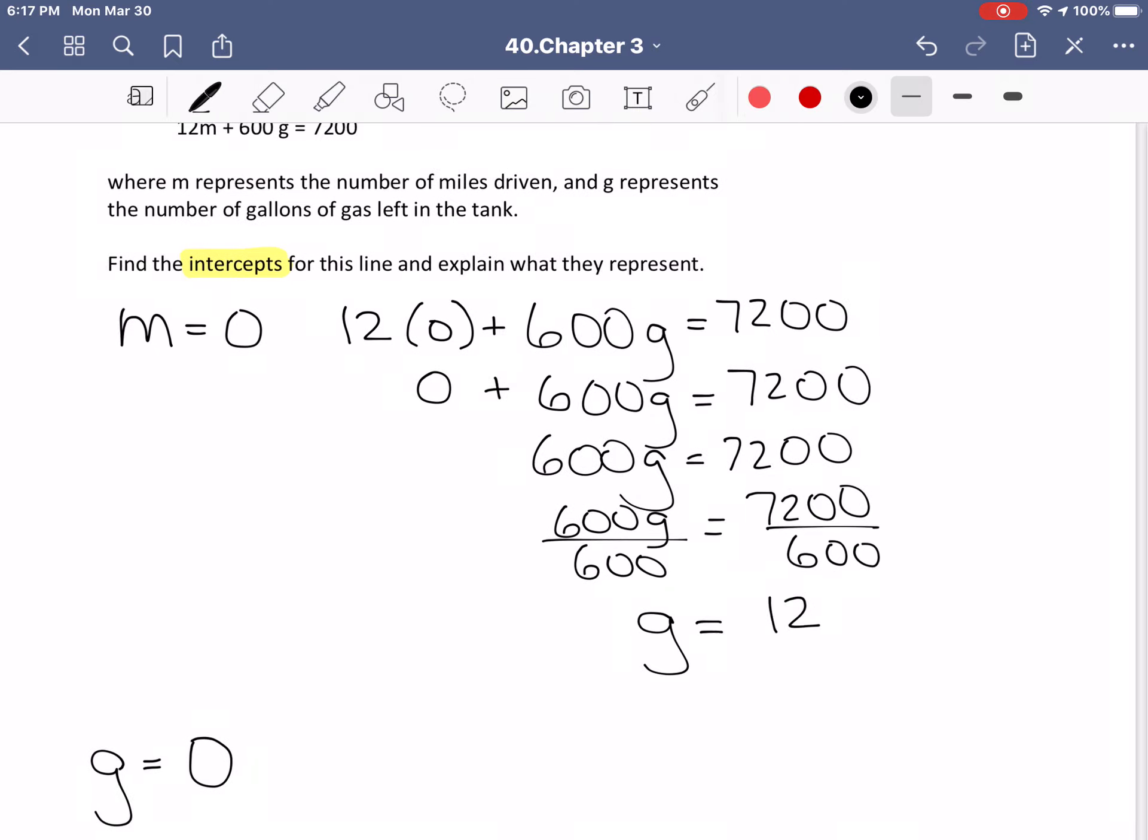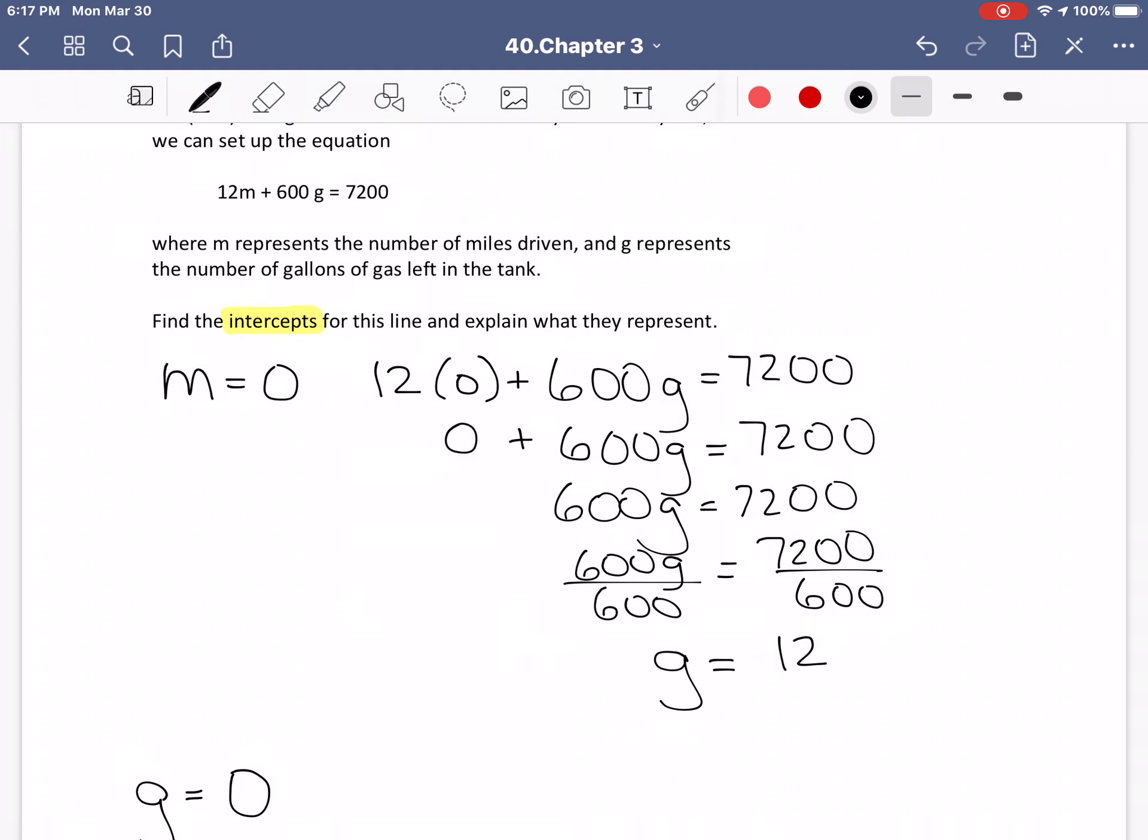So when I have driven zero miles, then my g is 12, and that's the number of gallons, which means that the tank holds 12 gallons of gas.